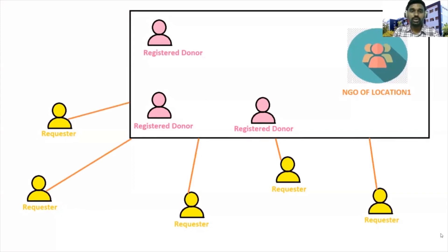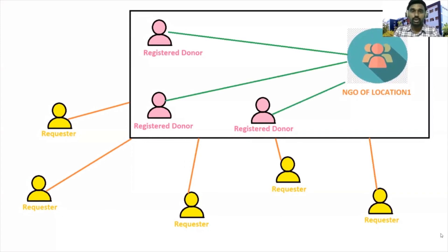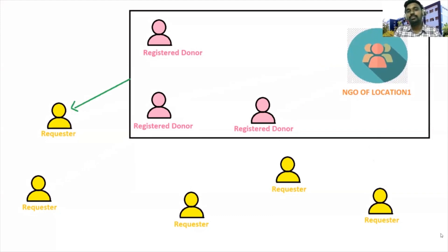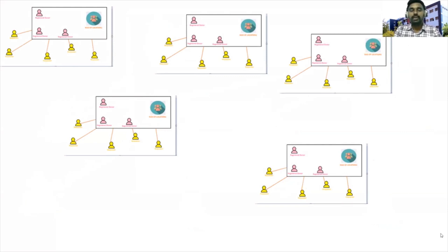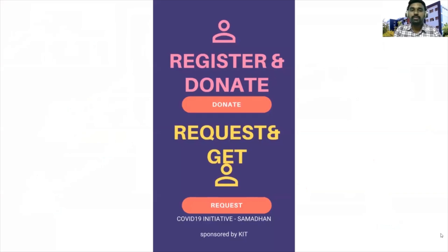The registered donors will be under one NGO of that particular location. The NGO will find the corresponding donors in that particular location and they will provide the required food to the requesters. Likewise, many locations can be controlled by many NGOs.